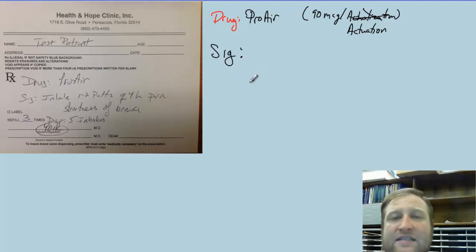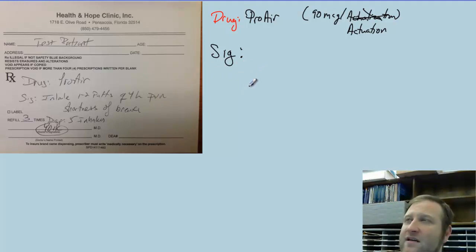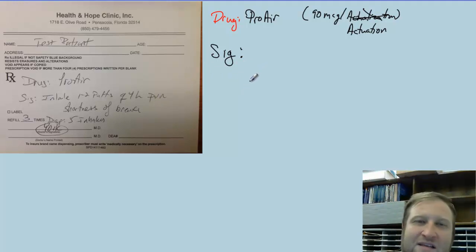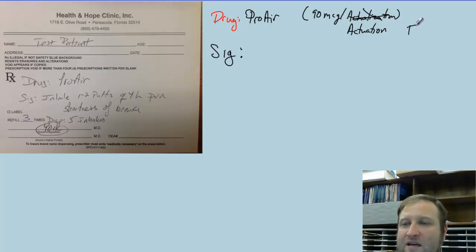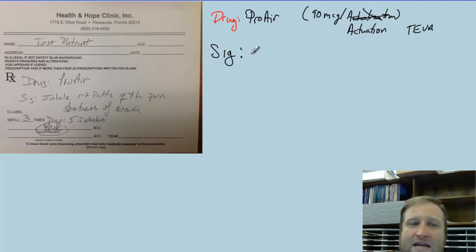This SIG will guarantee that the drug company — which is Teva — will give us the most amount of albuterol sulfate ProAirs per 90-day period for each one of our patients. So if we write this SIG, and this SIG will automatically populate every time you enter a ProAir, some of the providers may change it — they may want it Q6. However, that will not guarantee the patient receives three inhalers every three months.